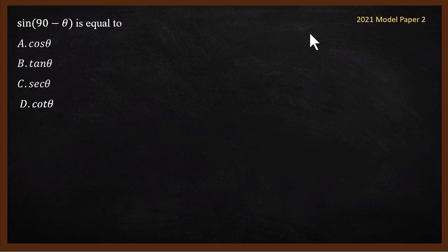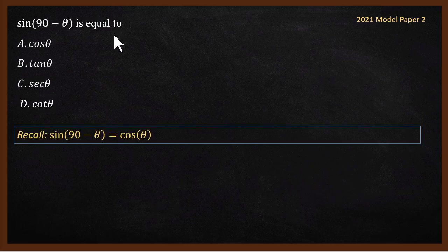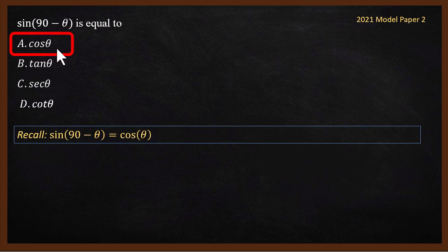Trigonometry question, model paper. Simple definition question. What is the question? Sin(90 - θ) is equal to what? So complementary angles. What can we say? We can say that sin(90 - θ) is cos θ. Which choice is correct? First one is correct. This is complementary angles formula question. Next.